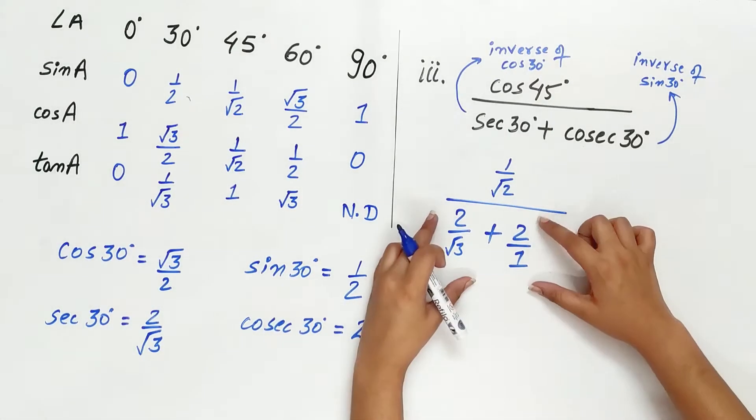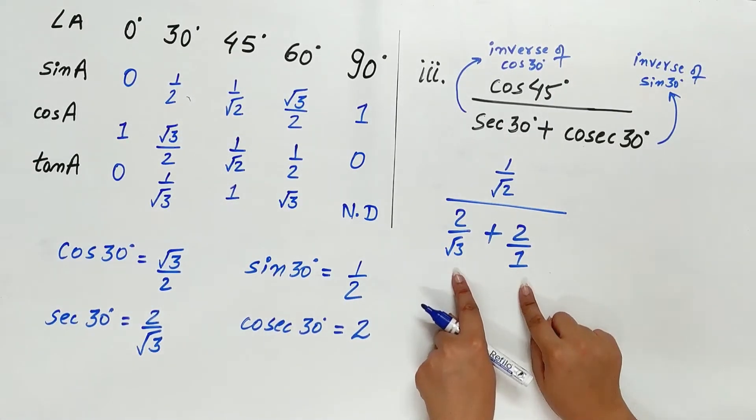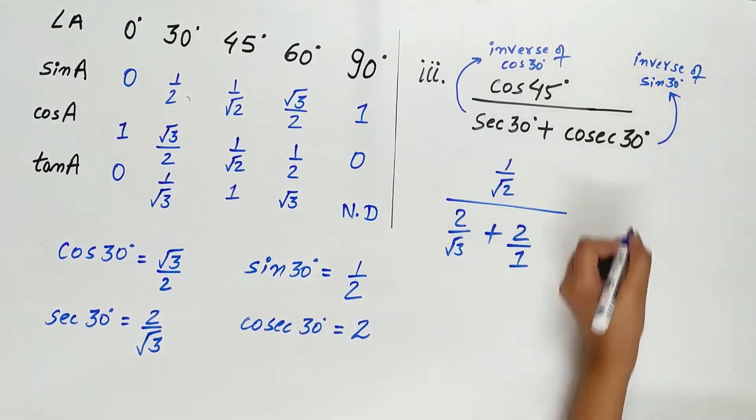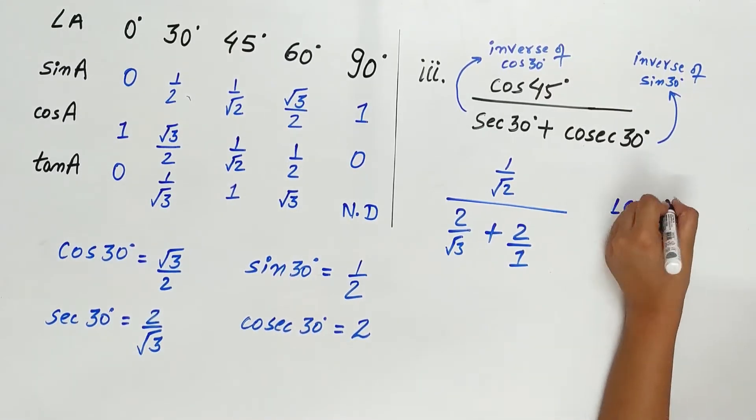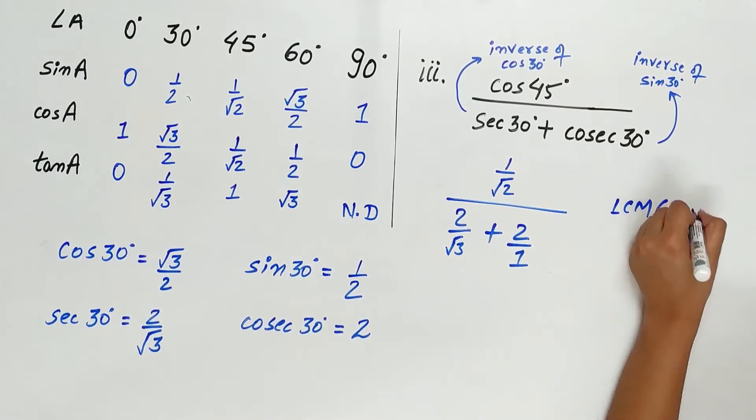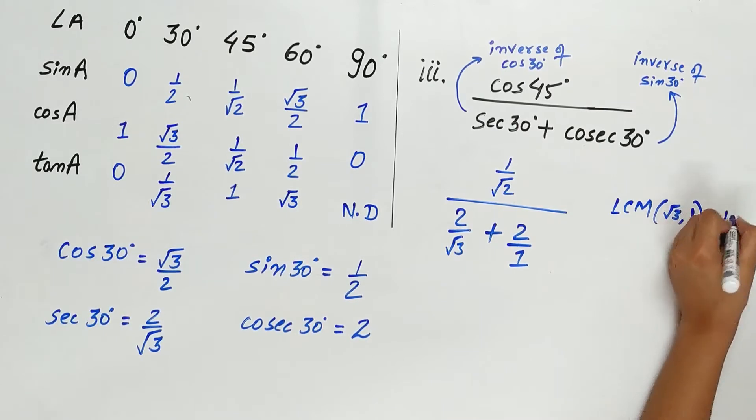Since we have to add both the terms but the denominator is different, take the LCM. LCM of root 3 and 1 is root 3.